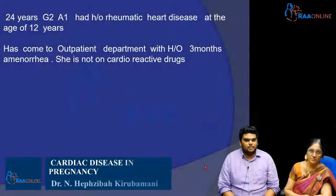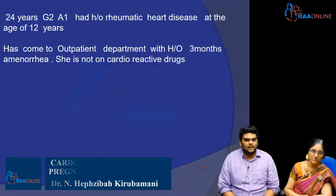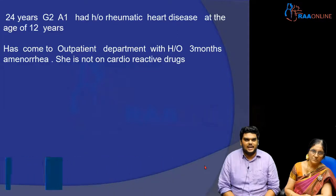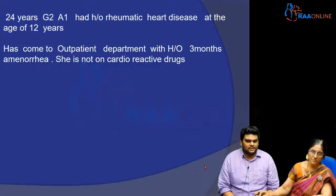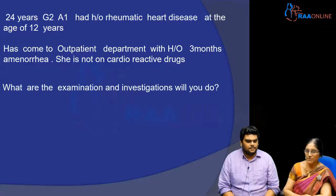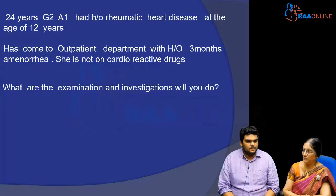A 24-year-old patient with an obstetric score of Gravida-2, abortion 1, had a history of rheumatic heart disease at the age of 12 years. She has come to the outpatient department with a history of three months of amenorrhea. She is not on any cardioreactive drugs. What examination and investigation would you like to do?